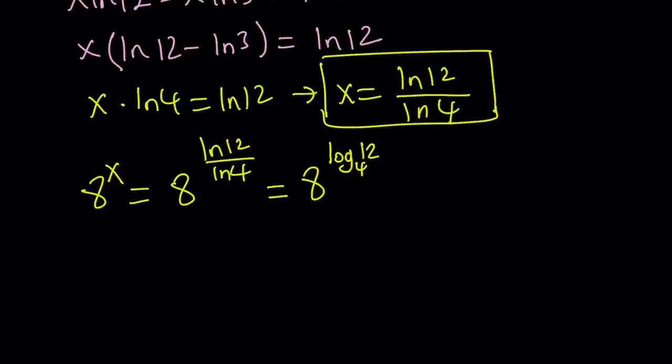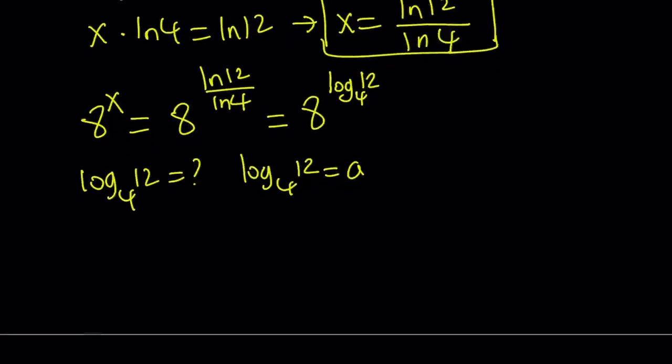But how do you simplify it? How do you find 8 to the power of something? So the question is, what is log 12 with base 4? That's what we've got to find out. So since we don't know what it is, let's go ahead and set it equal to a. From here, by using definition of logs, we get 4 to the power a equals 12.